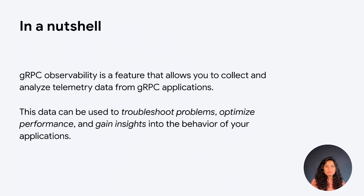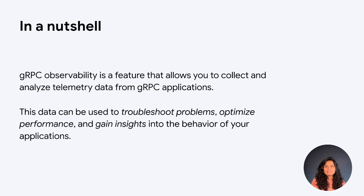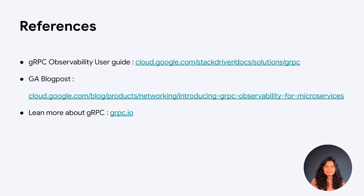To summarize, gRPC is becoming a foundational framework in developing applications in general and microservices in particular. Because developers have come to depend on gRPC, we think this foundational framework needs to provide the required level of support for its users. We believe gRPC observability is a great way to keep your microservices or distributed applications healthy and happy. We are also very excited to announce that gRPC observability is generally available. The details of everything we discussed can be found in the gRPC observability user guide, which also includes examples to help you get started. We also have a blog that talks about gRPC observability and how easy it is to integrate with your existing applications.